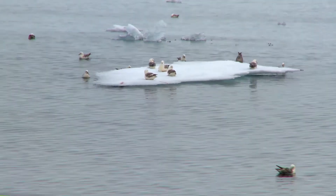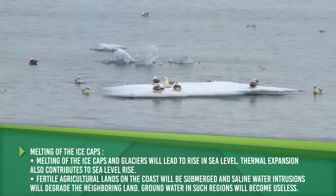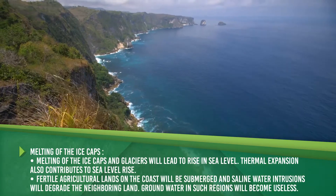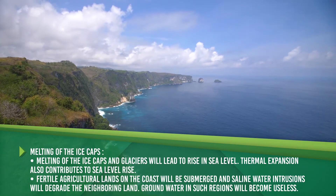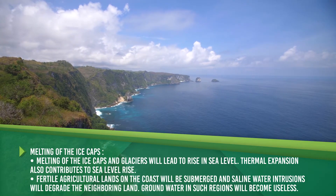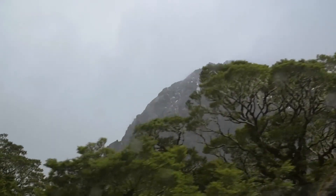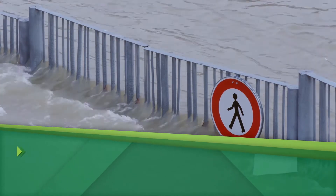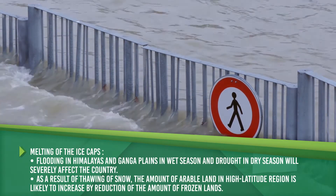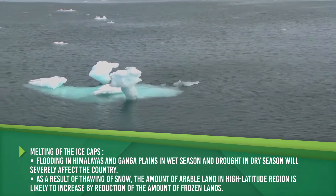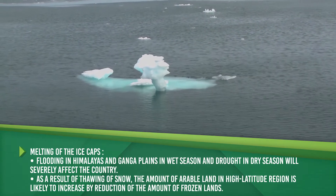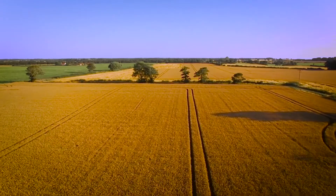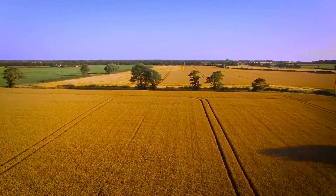Melting of the ice caps and glaciers will lead to a rise in sea level. Thermal expansion also contributes to sea level rise. Fertile agricultural land on the coast will be submerged and saline water intrusions will degrade the neighbouring land. Ground water in such regions will also become useless. There is evidence that some Himalayan glaciers have retreated significantly since the 19th century. Flooding in the Himalayas and the Ganga Plains in the wet season and drought in the dry season will severely affect the country. Arable land along the coastlines is bound to be reduced as a result of rising sea levels and saline water intrusions.